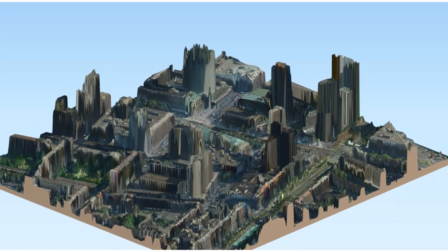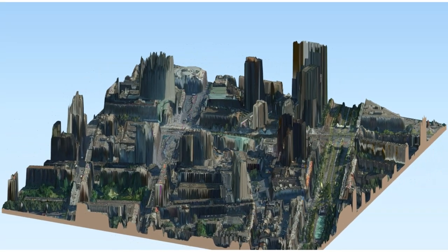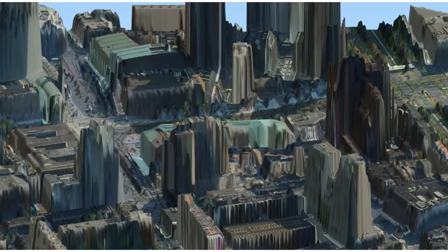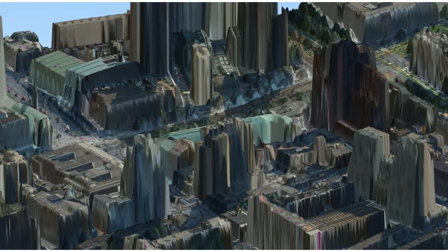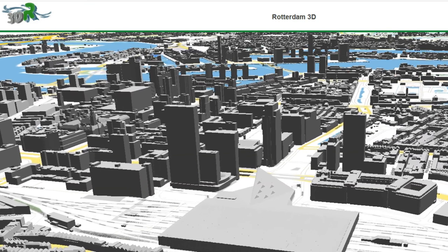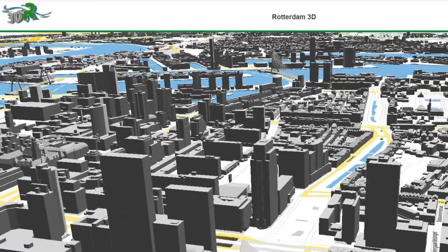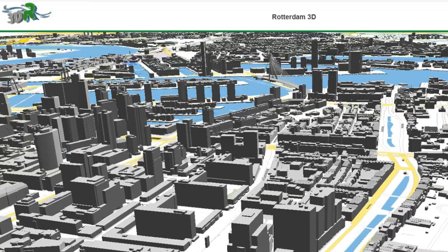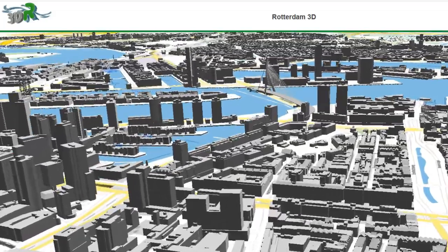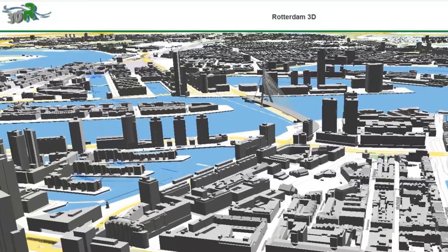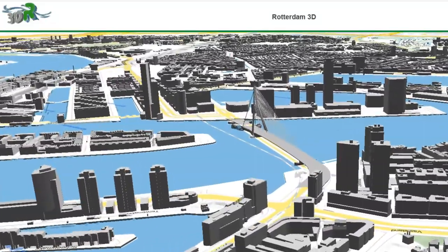Here we see a digital surface model of the city center of Rotterdam, where we used a 50 cm elevation model with aerial photographs draped over it. We can also generate a digital surface model based on vector data. In that case the building shapes are much clearer than when we use raster, but we don't have the texture information of the buildings. This data from Rotterdam is based on city GML data that can be freely downloaded from the internet.